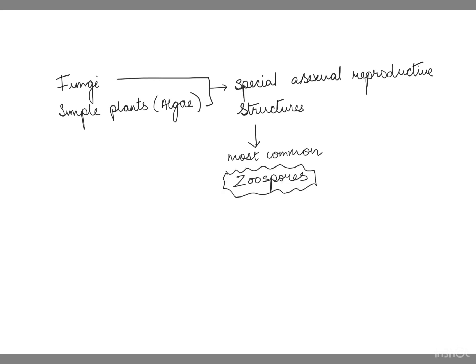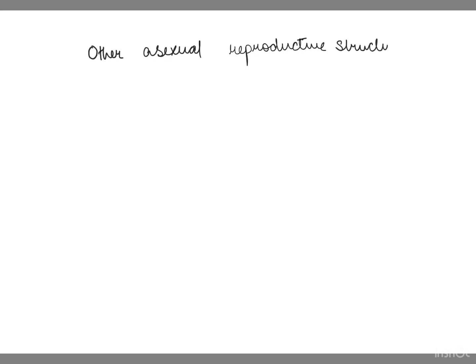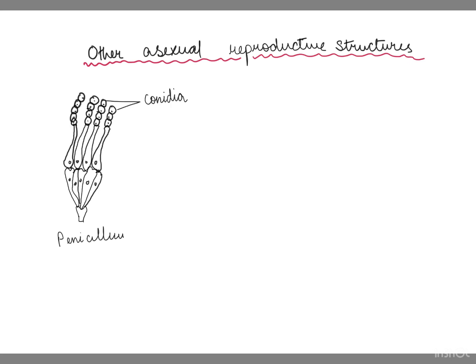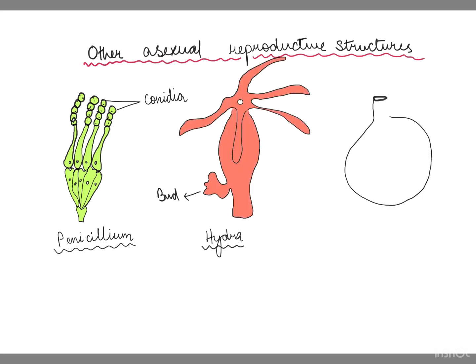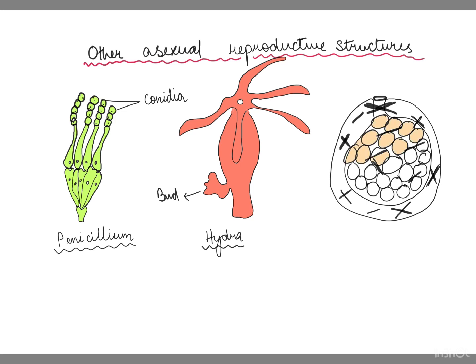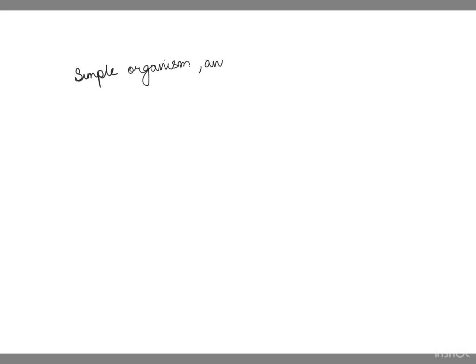In fungi and simple plants, special asexual reproductive structures are found, most commonly zoospores. These are motile structures that can be seen under a microscope. Examples include structures in Penicillium, budding in Hydra, gemmules in sponges, and various other asexual structures in simple organisms. In simple plants, zoospores and gemmules are common asexual reproductive structures.